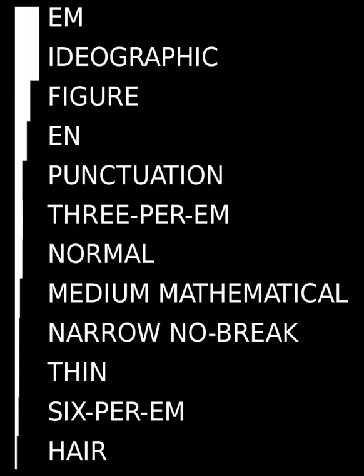In computer programming, whitespace is any character or series of characters that represent horizontal or vertical space in typography. When rendered, a whitespace character does not correspond to a visible mark, but typically does occupy an area on a page.